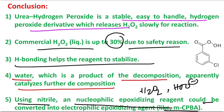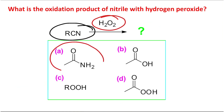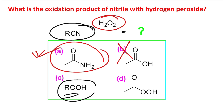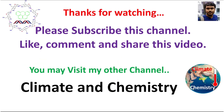So the answer to the MCQ — what is the oxidation product of RCN with hydrogen peroxide — is amide (option A). Why not the other options? Because these are mild conditions, so the amide cannot hydrolyze further to carboxylic acid. An alkyl hydroperoxide is not possible here, and a peroxy acid is also not possible since we started with RCN. Option A is the correct answer.